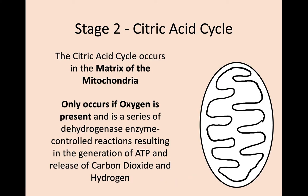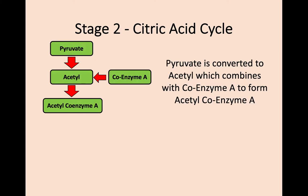Glycolysis takes place in the cytoplasm whether there is oxygen or not, but now we move on to stage two of respiration: the citric acid cycle. This can only take place if oxygen is available. If oxygen is present, the pyruvate produced in glycolysis moves into the middle of the mitochondria — the matrix. The citric acid cycle can look a little overwhelming at first, so we're going to break it down into two parts.